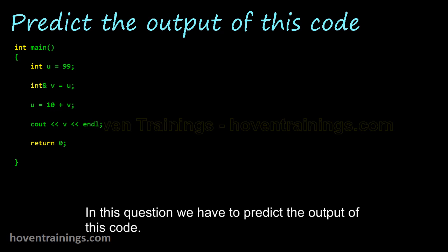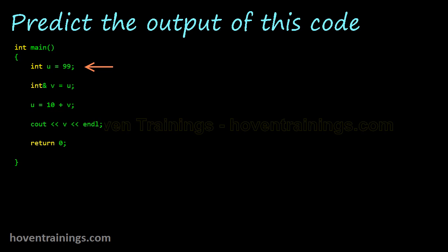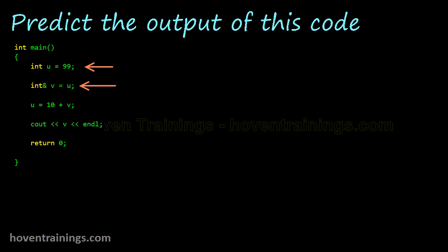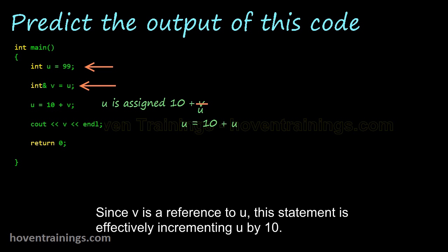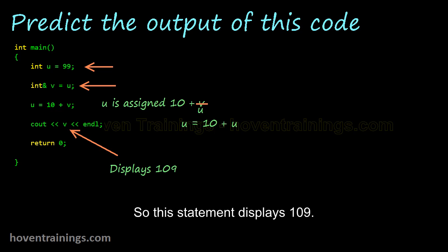In this question we have to predict the output of this code. U is initialized with 99. V is a reference to U. Since V is a reference to U, this statement is effectively incrementing U by 10. So this statement displays 109.